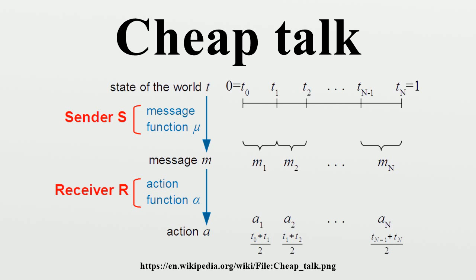Message. S decides to send message M. Message M may disclose full information, but it may also give limited, blurred information. It will typically say the state of the world is between T1 and T2. It may also give no information at all.